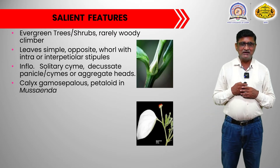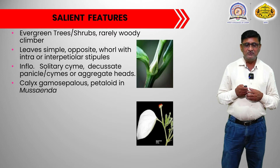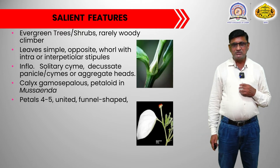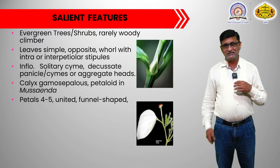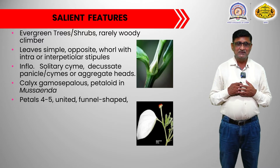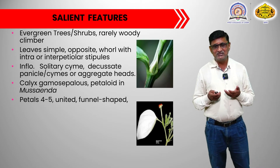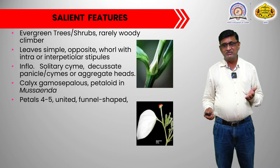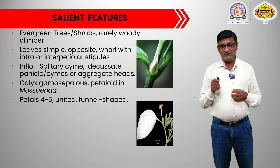Inflorescences are solitary cyme. They may occur in a decussate manner, panicles, or cymes, or they may be aggregated to develop a head. The calyx of the flowers is gamosepalous and petaloid in some species. You can see in the image that one of the petals becomes larger or enlarged like a leaf and becomes colored. In some plants, the sepals are petaloid — they become colored. The reason is that the flowers are very small and not very attractive, so for attracting insects for pollination, some other parts become attractive, and that is why the calyx becomes colored in some species.